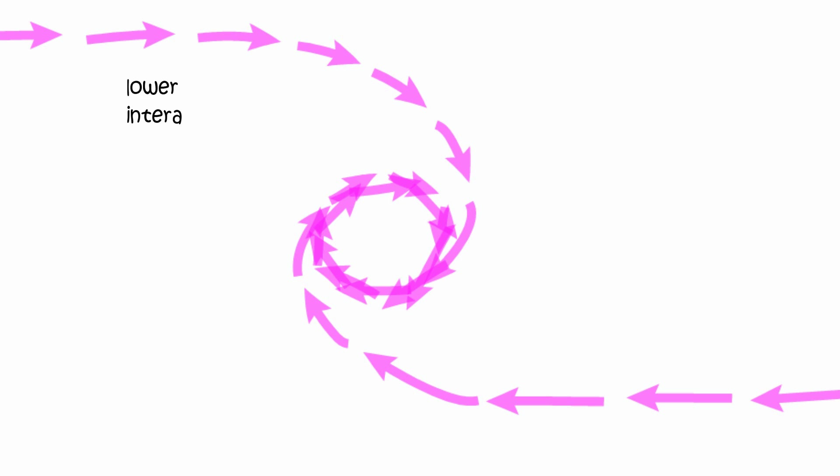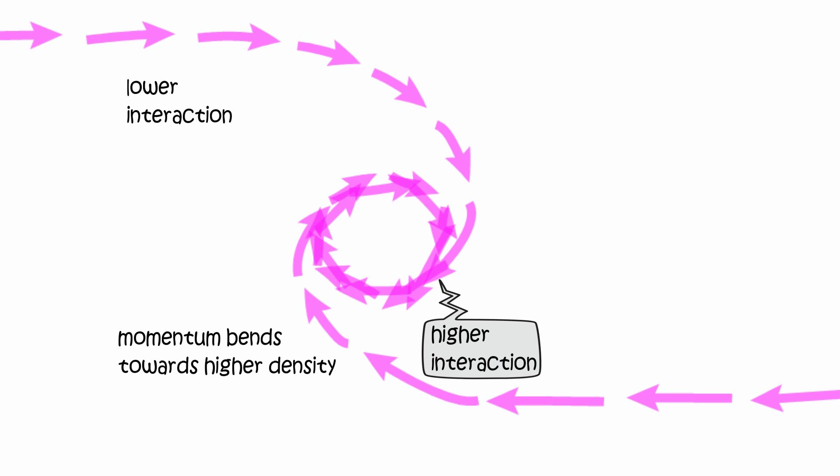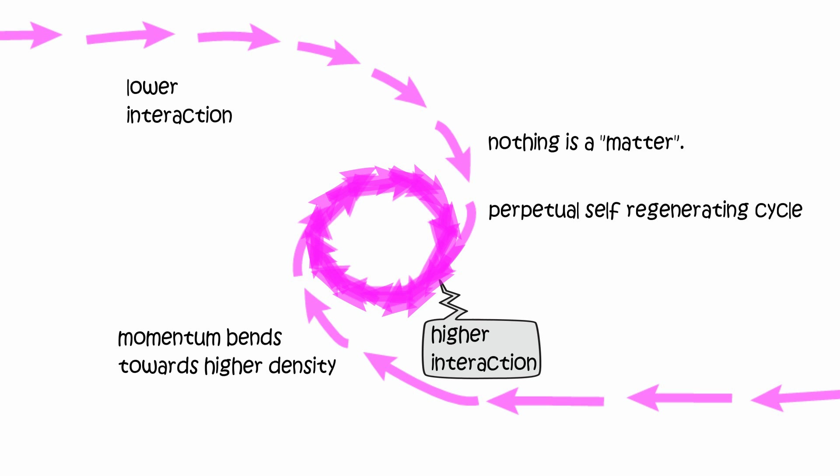Momentum traveling with higher interaction causes outside observer to perceive it as moving slower. This causes momentum to curve towards higher interaction, and eventually a spin when field density is high enough. Once a fundamental spin is configured, it is so self-regenerating that it will never unweave, unless it is dissolved by an equal and opposite configuration.